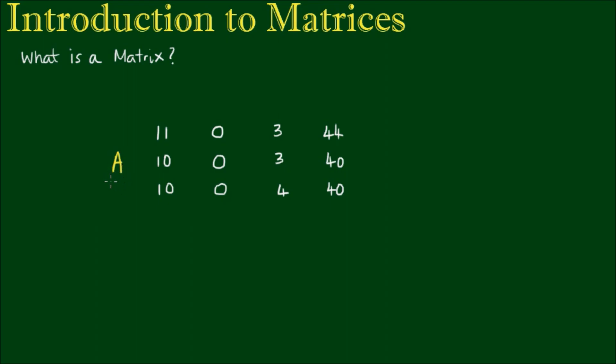But in handwriting, we would normally write this with a wavy line or tilde underneath. We say the matrix A is equal to the array of numbers enclosed by square brackets, or we can use big rounded brackets. I like to use square brackets because they are a bit neater.